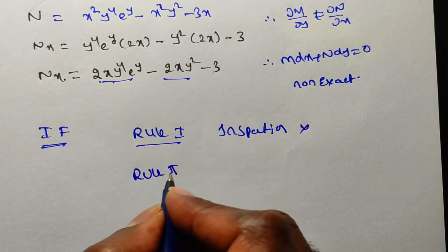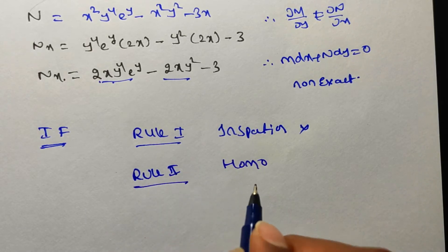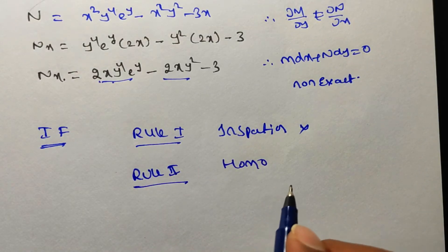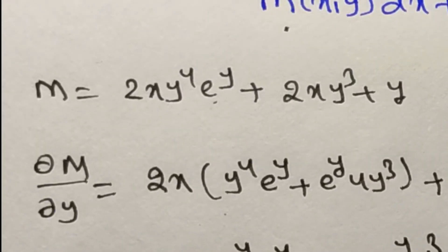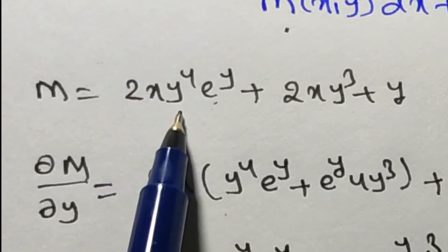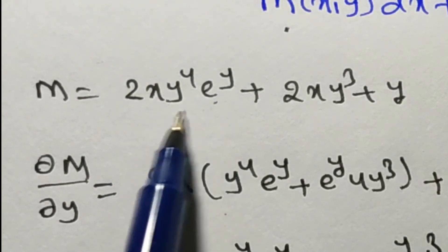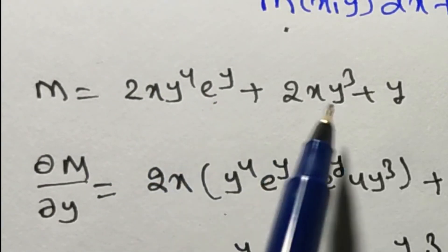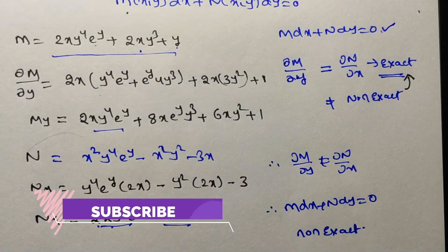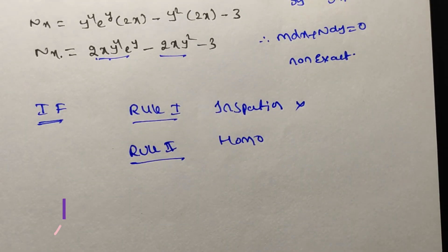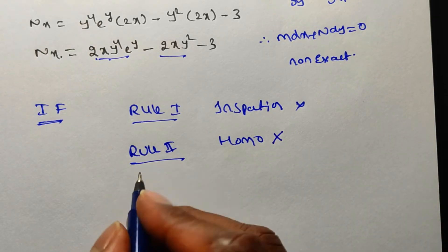We go to Rule 2: homogeneous functions. We verify whether M and N are homogeneous functions of the same degree. But M contains an exponential term eʸ, so we cannot assign a degree to it — M is a non-homogeneous function. Therefore Rule 2 does not apply.